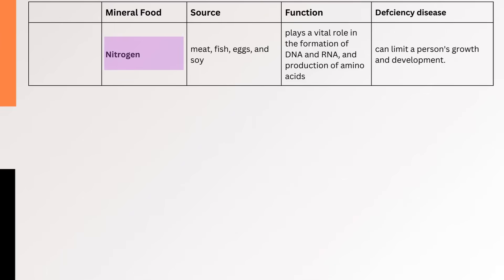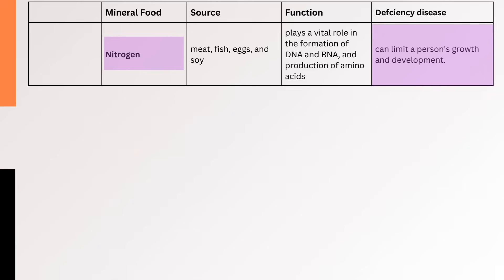7. Nitrogen — Nitrogen is an essential nutrient found in various food sources such as meat, fish, eggs, and soy. This nutrient plays a vital role in the formation of DNA and RNA, as well as in the production of amino acids. A nitrogen deficiency can limit a person's growth and development.